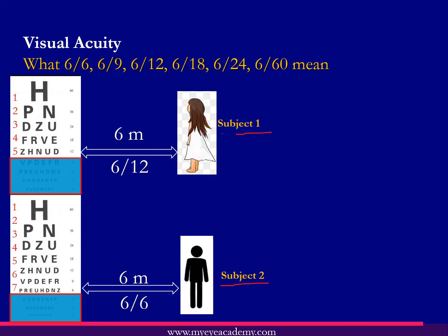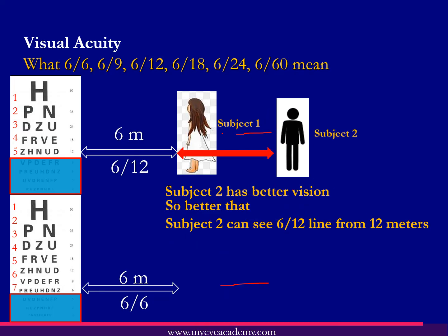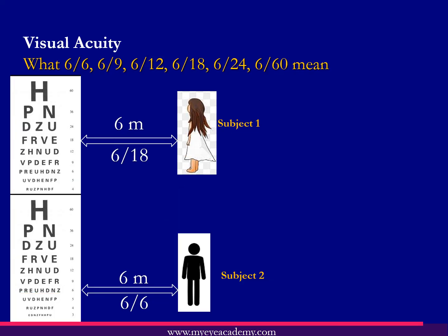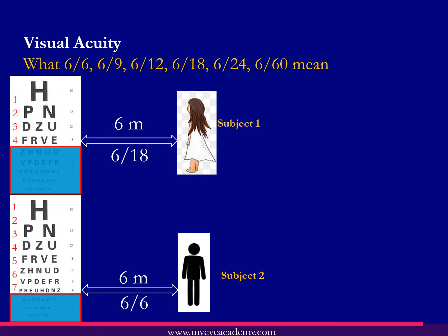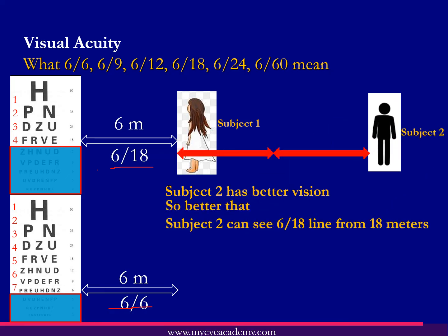What does this mean? Subject two has better vision than subject one — subject two can see the 6/12 line from 12 meters, compared to subject one who can only see it from 6 meters. Another example: subject one can see four lines and has visual acuity of 6/18, while subject two has 6/6, meaning subject two can see the 6/18 line from 18 meters while subject one can only see it from 6 meters.